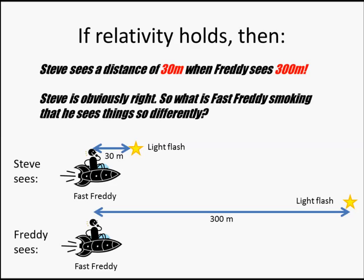So, how can Freddy possibly think that the light flash is a full 300 meters ahead? What is Freddy smoking that he can be so wrong about a simple thing, like a measurement of distance? What is Freddy smoking? He's obviously having some kind of hallucination, because he can't tell the difference between 30 meters and 300 meters.